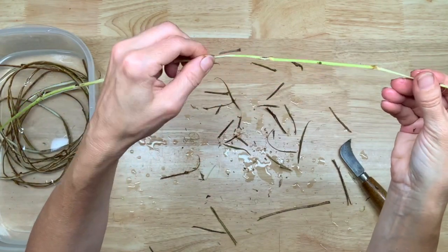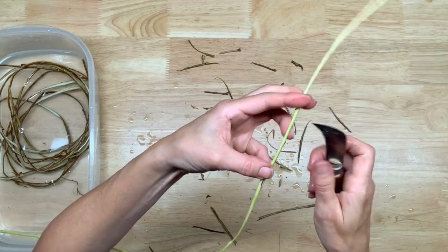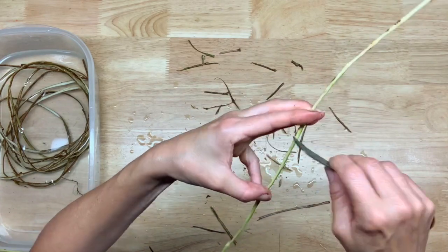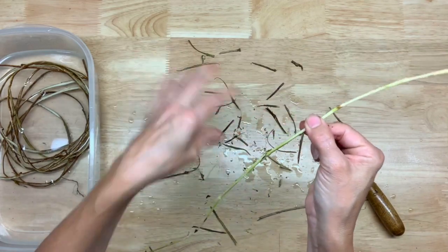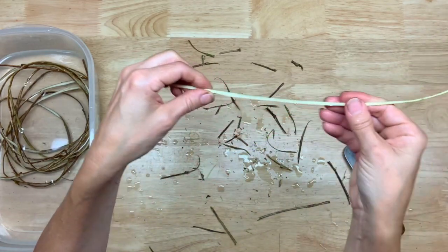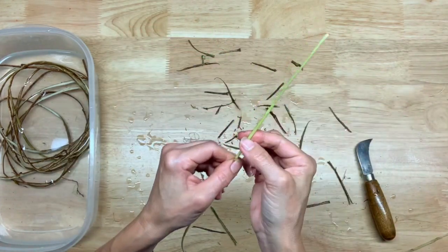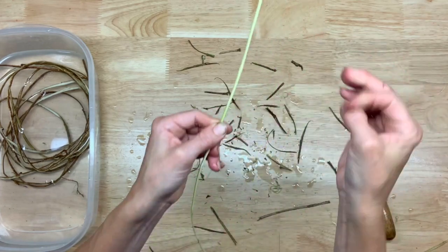You can see it's got this green tinge - that's the membrane just underneath the bark. You can scrape that right off. I usually don't get too fussy at this point because I'm always cleaning as I go when I weave with it later. You can also just use your fingernail if you prefer.